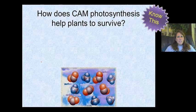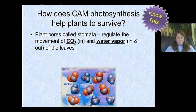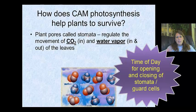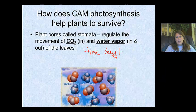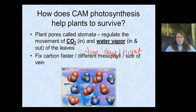This will be a test question: how does CAM photosynthesis help plants survive? The answer is that it allows regulation of carbon dioxide going into the plant and water vapor going out, based on the time of day — specifically at night when the stomata and guard cells open.